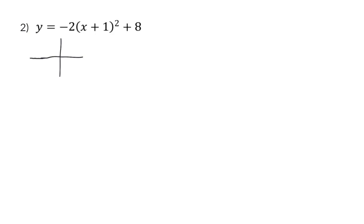In example 3, we have three transformations. Firstly, the minus 2 indicates that the graph has reflected around the x-axis and now forms a sad face. Next, we have the plus 1 in the bracket, and this indicates that the graph moves one unit in the negative direction on the x-axis. And lastly, the plus 8 indicates that the graph moves eight units upwards, meaning this graph will have a turning point, two x-intercepts, and a y-intercept.